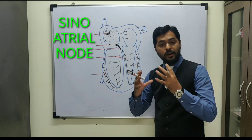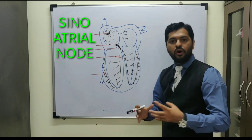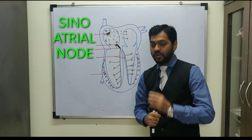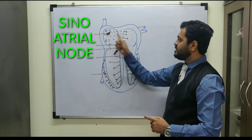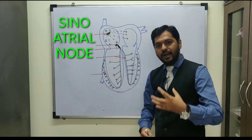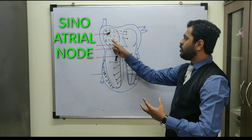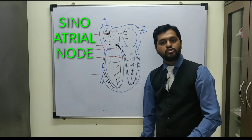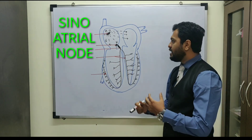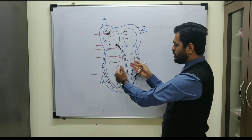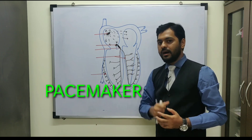The SA node is a neuromuscular tissue. It can generate the impulse for the wave of contraction. Usually impulses are generated by neurons, but SA node is a specialized muscle which has the power to generate impulses. The impulse generated by the SA node is transmitted to both the atria, and that is responsible for atrial systole or atrial contraction, pumping blood into the ventricles. So the SA node is the pacemaker of the heart.